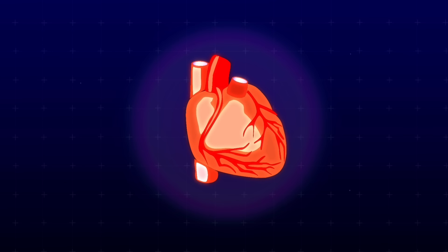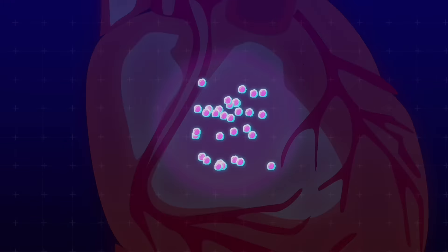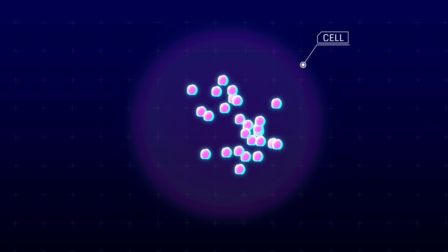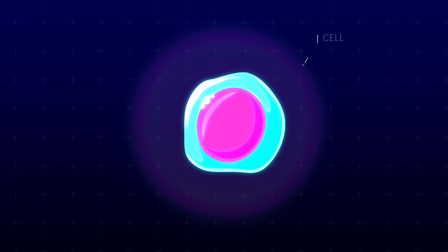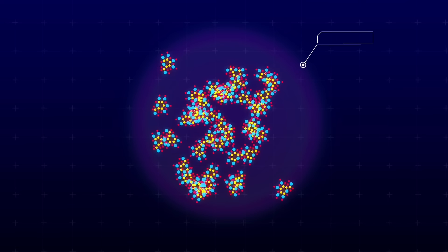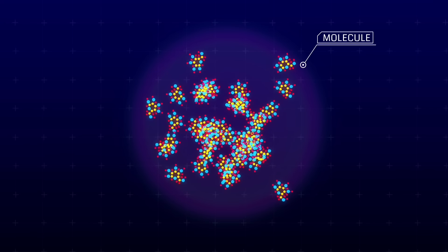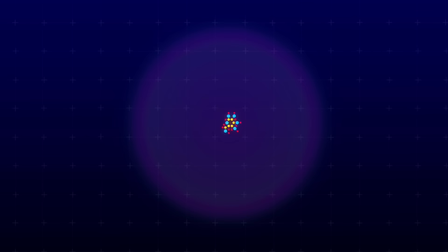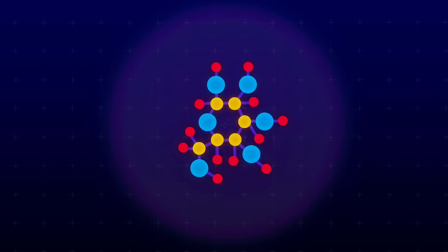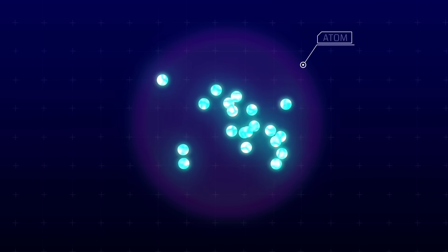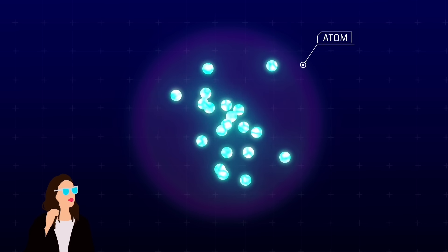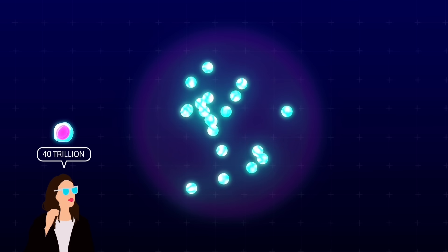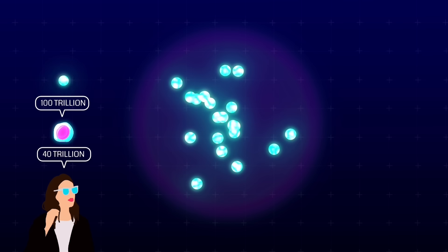Take one of the organs, the heart, and if we zoom into it deeply, we can see billions of cells. But the cell isn't its final stage. If we zoom further into a singular cell, we'll end up with molecules. In just this one cell, there are millions of unique complex molecules. Take one of these molecules, zoom in even more, and finally we can see atoms. To put it simply, the human body consists of around 40 trillion cells, and a single cell contains approximately 100 trillion atoms.